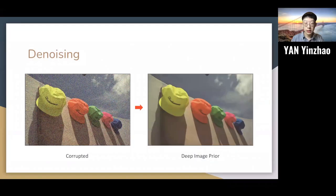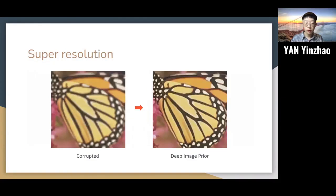For image denoising, originally we have an image with some noise. And after we applied the Deep Image Prior, we could get an image without noise. And for super-resolution, originally we have a low-resolution image. And after we applied the Deep Image Prior, we could get a high-resolution image.